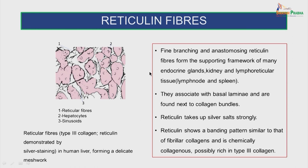The reticular fibers — these are Type III collagen, the reticulin demonstrated by silver staining in a human liver, forming a delicate meshwork. They are seen as fine branching and anastomosing reticulin fibers. They form the supporting framework of many endocrine glands, kidney and the lymphoreticular tissue including lymph node and spleen. They associate with the basal lamina and are found next to collagen bundles. The reticulin takes up silver salts strongly and shows a banding pattern similar to that of the fibrillar collagens, being chemically collagenous and possibly rich in Type III collagen.